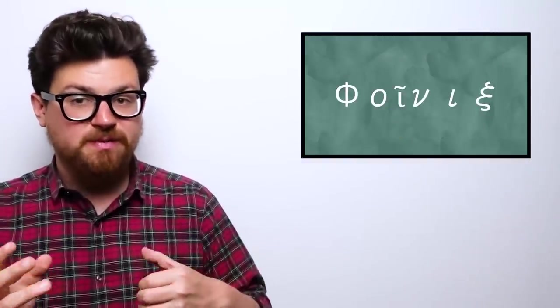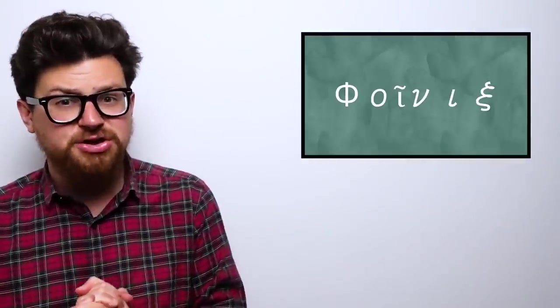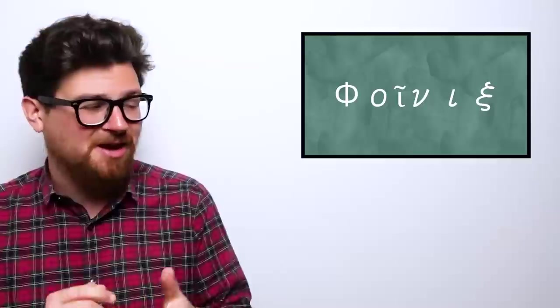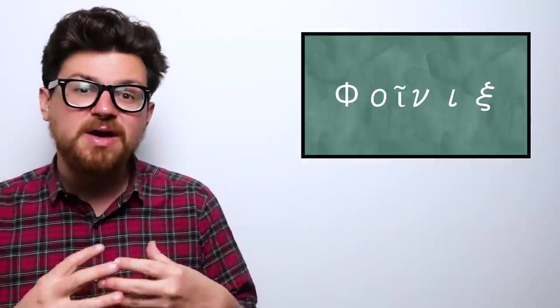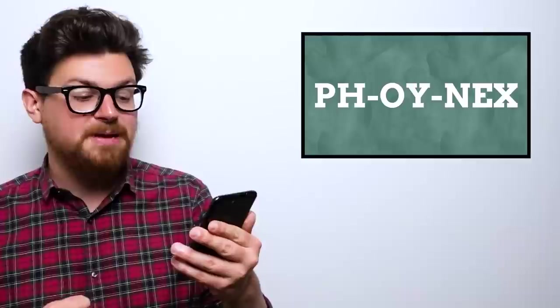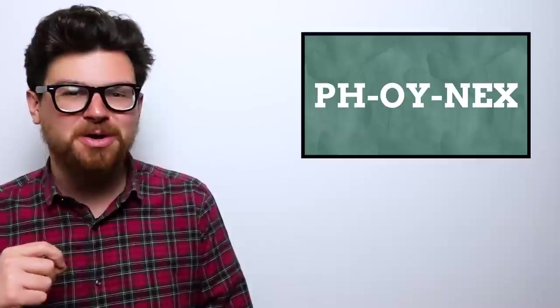So for this video, instead of looking into the history of the name Phoebe, we're going to look into the history of the name Phoenix, because they're probably the exact same story. Phoenix in ancient Greek was spelled something like this, and it was pronounced according to Forvo, Phoenix. I wrote it out phonetically as P-H-O-Y-N-E-X.